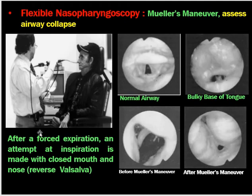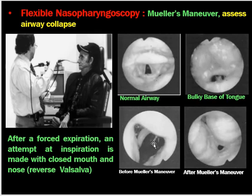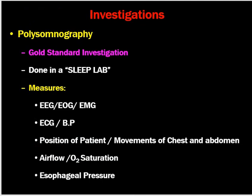Nasopharyngoscopy with Muller's maneuver is performed to assess airway collapse. After a forced expiration, an attempt at inspiration is made with the mouth and nose closed — a reverse Valsalva maneuver. This helps visualize a normal airway versus a bulky base of tongue reducing the airway. Before and after Muller's maneuver, one can see the laryngeal inlet and assess airway obstruction.